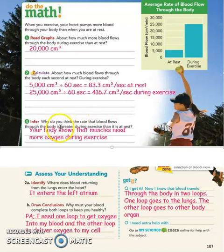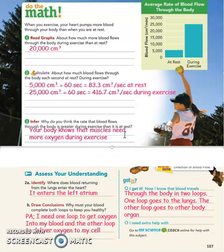Question three: why do you think the rate of blood flow is greater during exercise compared to rest? Your body knows that muscles need more oxygen during exercise. That is why blood is pumped faster — to capture more oxygen and deliver it to the muscles. If muscles don't have oxygen they become weak, so the heart pumps more blood to supply them.